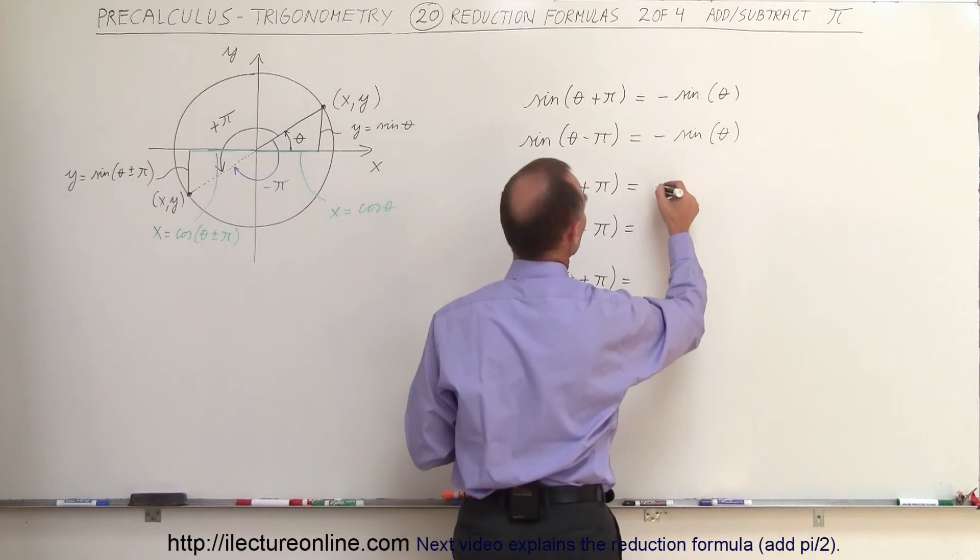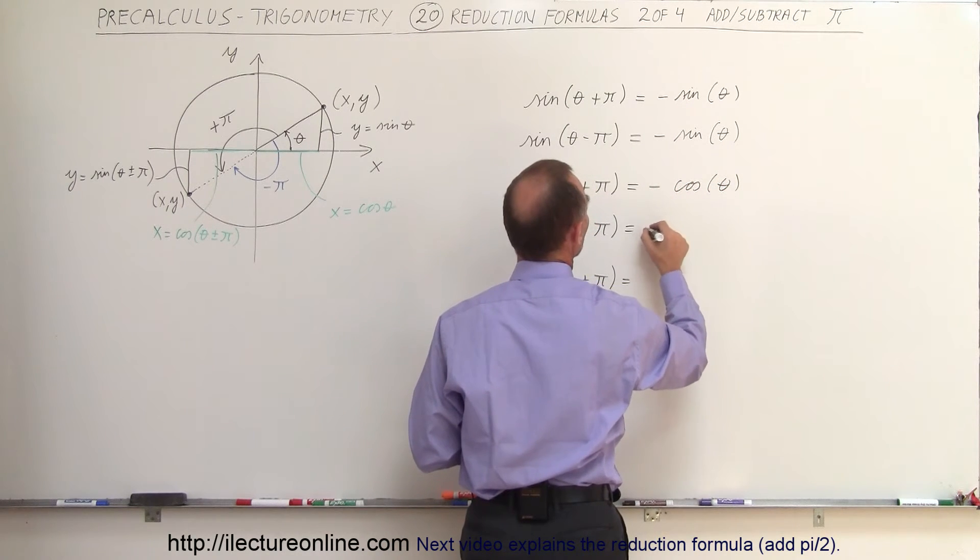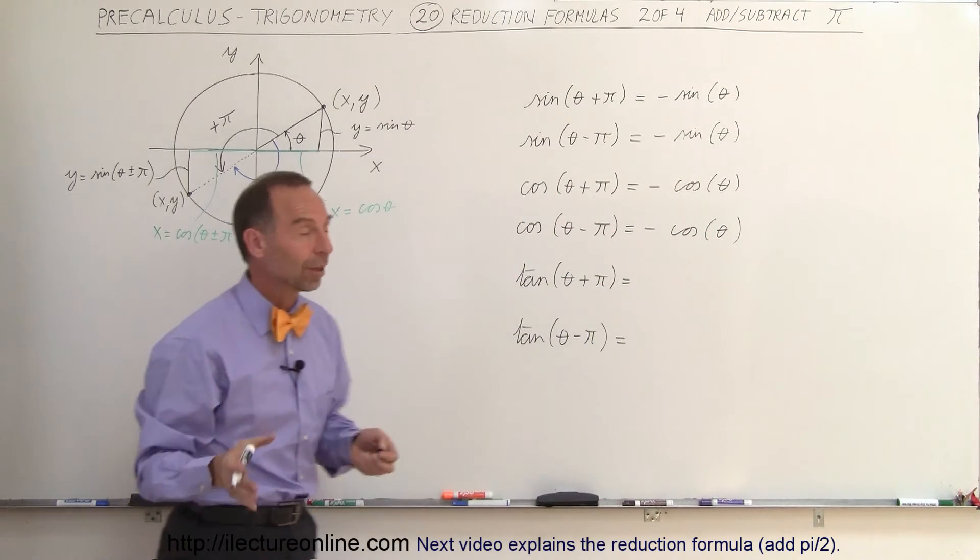Same with the cosine, this is equal to the minus cosine of theta and this is equal to the minus cosine of theta. Again it doesn't matter if we add or subtract pi, the cosine becomes negative.